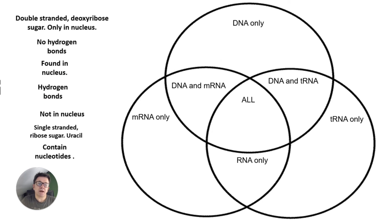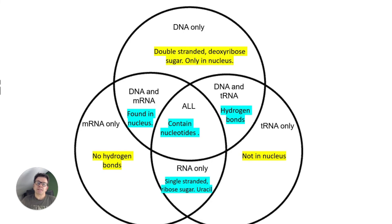So let's do a three-circle Venn diagram. We can bring in tRNA as well. I'm going to give you a clue to make it easier: only one statement goes in one particular part of the Venn diagram. What I would do is pause it, have a go yourself, and then we'll go through the answers. DNA only is double-stranded deoxyribose sugar and only found in the nucleus.